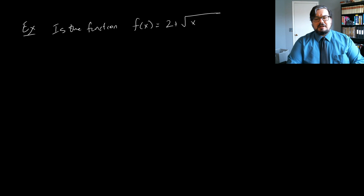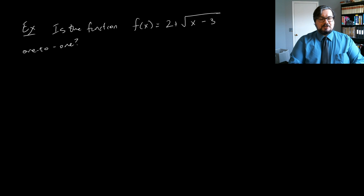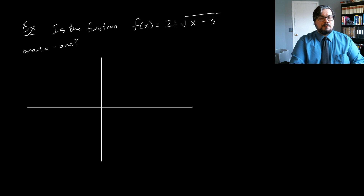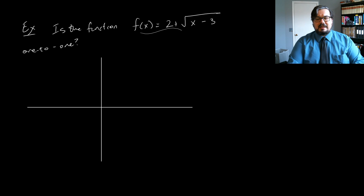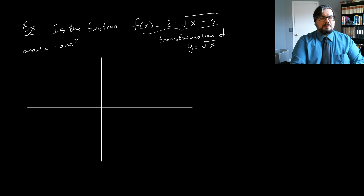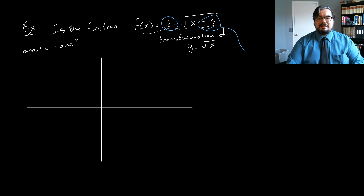Is the function f(x) = 2 + √(x − 3) one-to-one? One way of doing this is to graph it. This function is a transformation of y = √x. We can see from the minus 3 inside the function that we're shifting to the right by 3, and adding 2 on the outside means we're shifting up by 2.